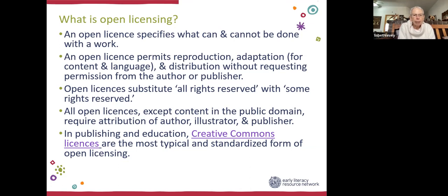All open licenses, except for content in the public domain, require attribution. That means authors, illustrators, and publishers must receive credit for the work that they have done. And in publishing and education, Creative Commons licenses are the most typical and standardized form of open license. They give you the legal framework for the license itself.